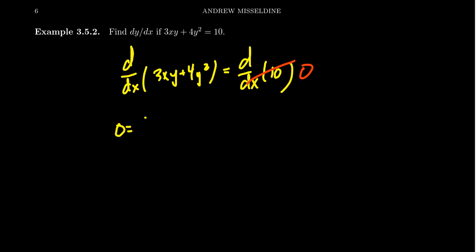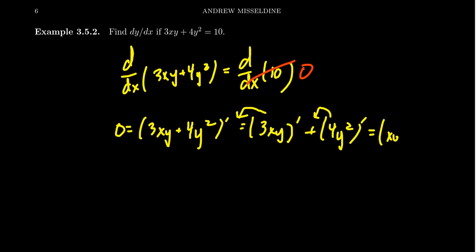As for the 3xy plus 4y squared, by the usual rules of derivatives, I can take the sum of these derivatives separately. That is, we'll take the derivative of 3xy and add to that 4y squared. But then also, these constant coefficients can come out of the derivative process. And so we have 3 times the derivative of xy, and then we have 4 times the derivative of y squared.